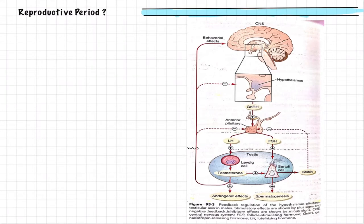After knowing how the process of spermatogenesis occurs — how the ploidy changes throughout the process, the chromosome number, and the types of divisions — the question arises: when does spermatogenesis start? Does it start before birth in the fetal embryonic period, after birth during childhood, or at the age of puberty? The answer is at the age of puberty.